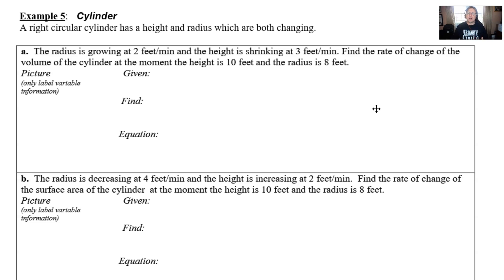We can branch off and do two separate problems. Problem A says the radius is growing at 2 feet per minute and the height is shrinking at 3 feet per minute. Find the rate of change of the volume of the cylinder at the moment the height is 10 feet and the radius is 8 feet.